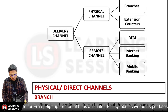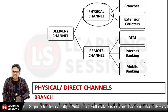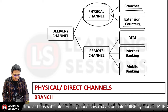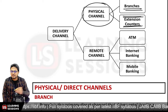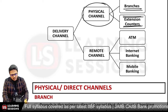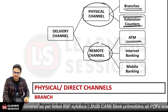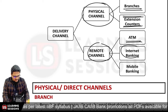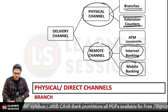In banking, there are two types of delivery channels. First are physical channels such as branches, extension counters, business facilitators, and business correspondents. Second are remote channels including ATMs (Automated Teller Machines), internet banking, and mobile banking.